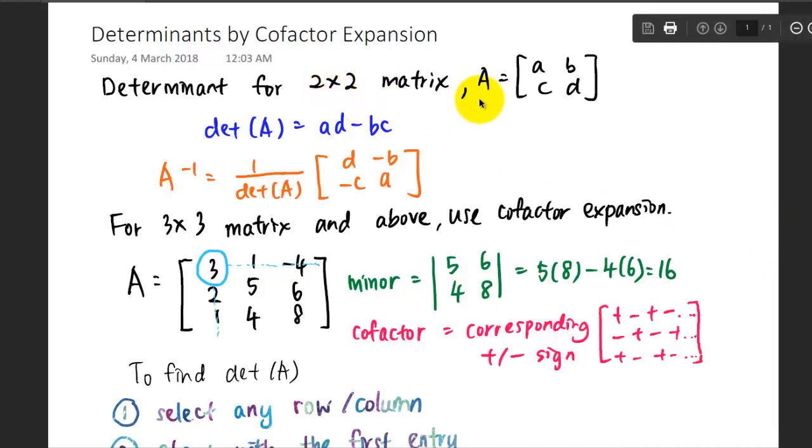For a matrix of 2 by 2, let's say A equals [a, b; c, d], the determinant of A is just the multiplication of a and d minus b and c. You can use this determinant to find the inverse for a 2 by 2 matrix using this formula: 1 over determinant of A, and you interchange the position of a and d, you multiply b and c with negative 1.